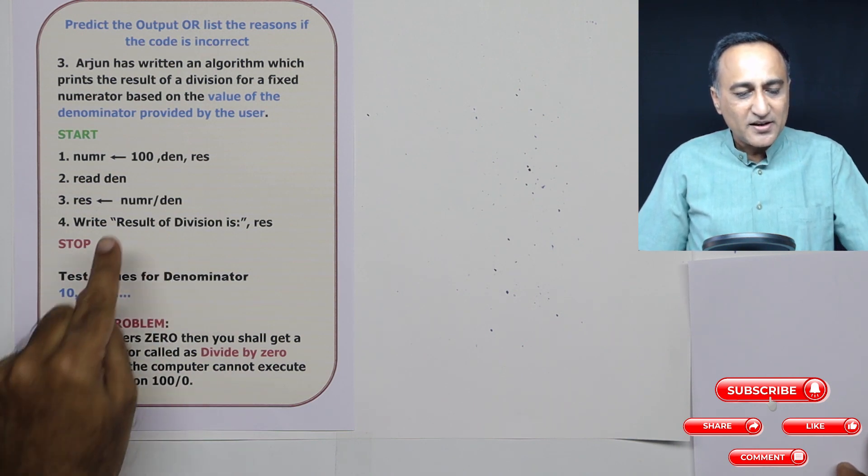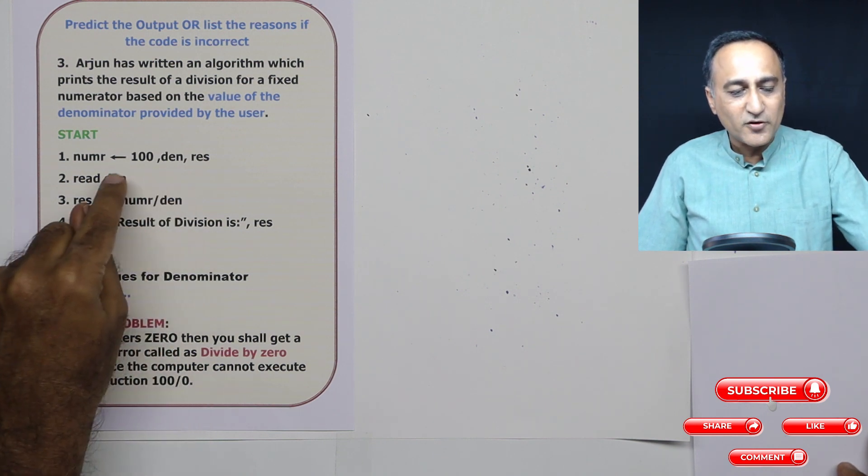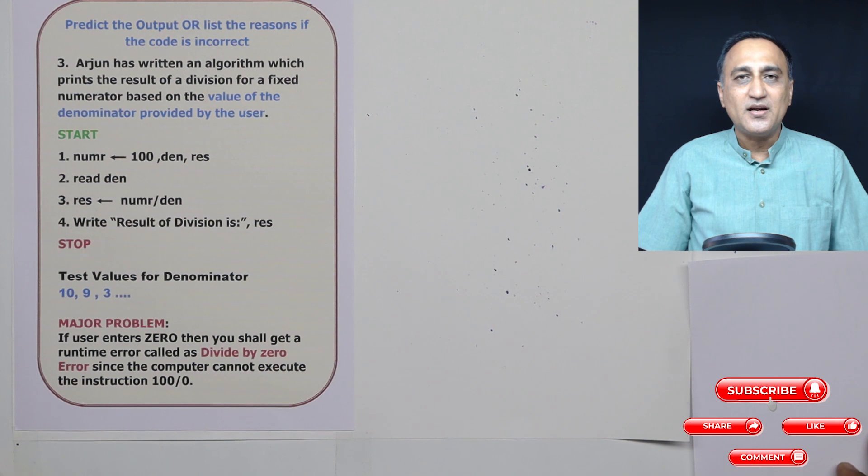That is the major problem with this algorithm logic. Please be aware, you never attempt to divide by zero, or be careless enough to do something like this.